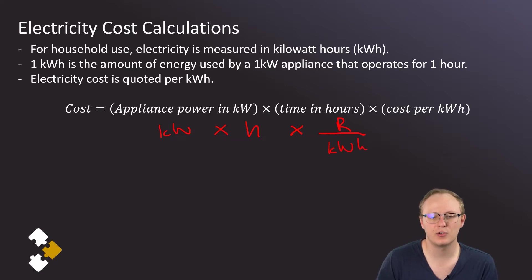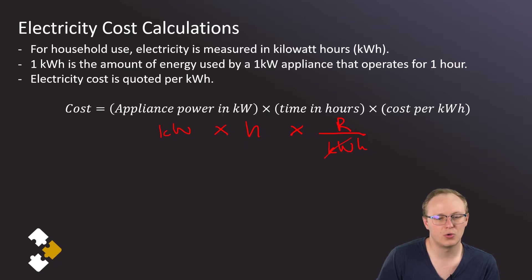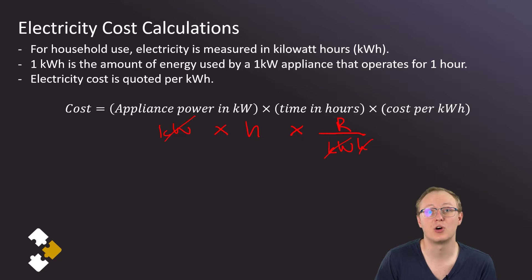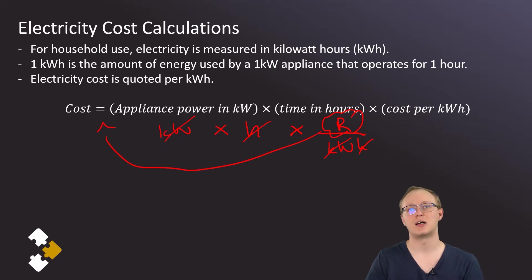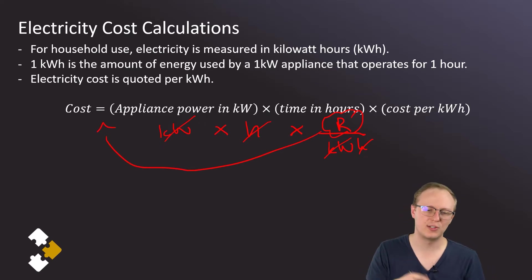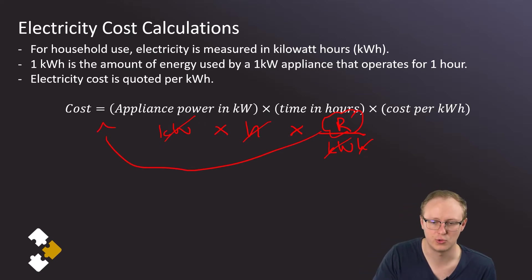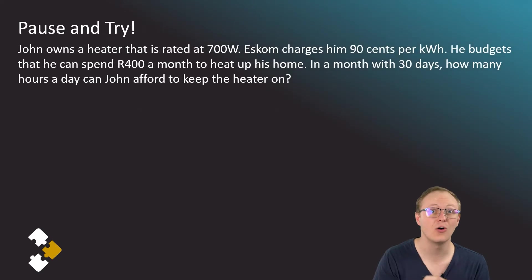You can justify this formula through unit analysis: kilowatts in the denominator cancel with kilowatts in the numerator, and hours in the denominator cancel with hours in the numerator, leaving you with rands — which is the unit for cost.